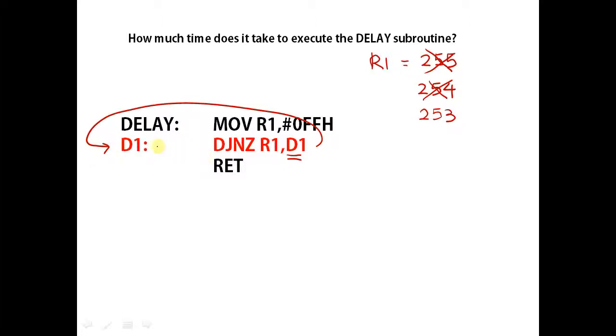The DJNZ instruction is executed again. This instruction will continue to be executed. The value of R1 continues to be decremented by 1.